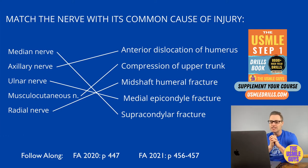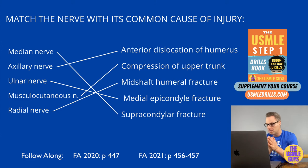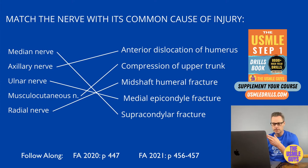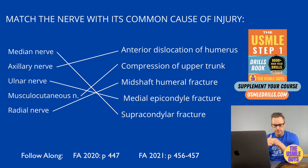Our final nerve is the radial nerve, which originates from the posterior cord and is formed from the posterior divisions of all three trunks. It supplies sensation to the posterior arm and forearm, the lateral two-thirds of the dorsum of the hand, and the proximal dorsal aspect of the lateral three-and-a-half fingers. Motor supply goes to the posterior compartment of the arm — think triceps — as well as the posterior forearm, including the brachioradialis, anconeus, supinator, extensor carpi radialis longus and brevis, extensor carpi ulnaris, abductor pollicis longus, and various thumb and finger extensors.